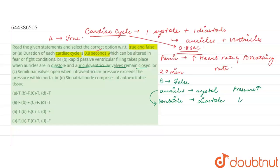The auriculo-ventricular walls are those walls present between the auricles and the ventricles, which includes the bicuspid and tricuspid valves. These walls have to be open for the ventricles to fill. Since the statement says they are closed, statement B is false.